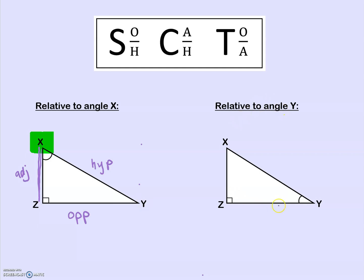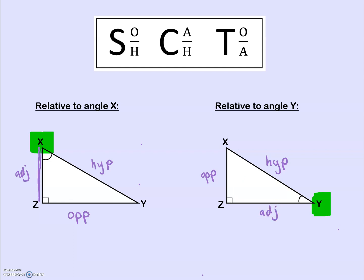Now let's look at the second example where we're talking about the sides relative to angle Y. Our hypotenuse in a right triangle is always going to be the same — it's always the side across from the right angle. So we label that as our hypotenuse. The side opposite angle Y is the one across from it, so that's our opposite. And then our adjacent is the one next to Y that's not our hypotenuse. If you can get comfortable with that, it'll make everything easier.